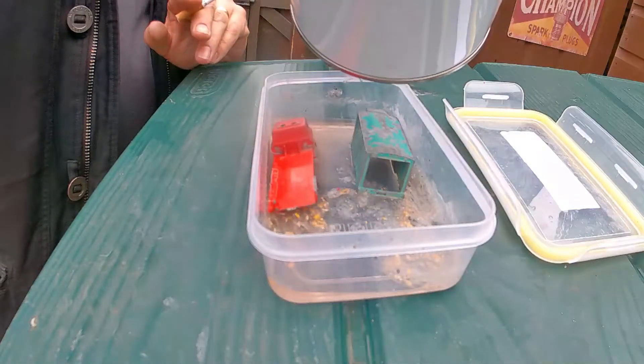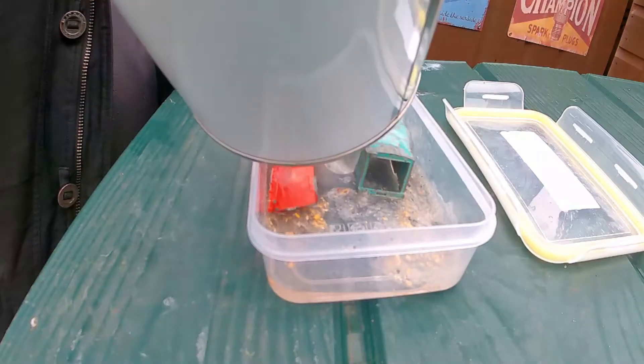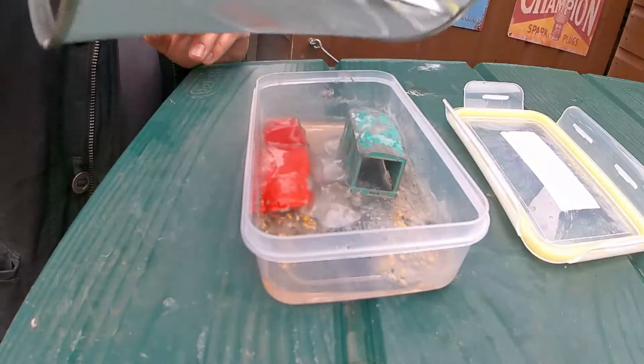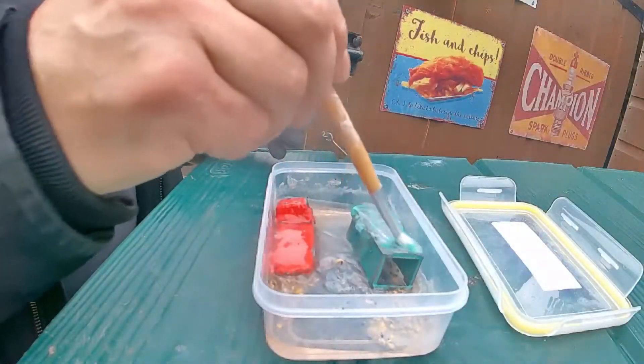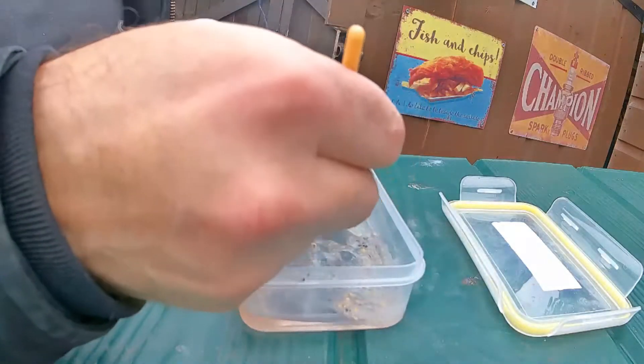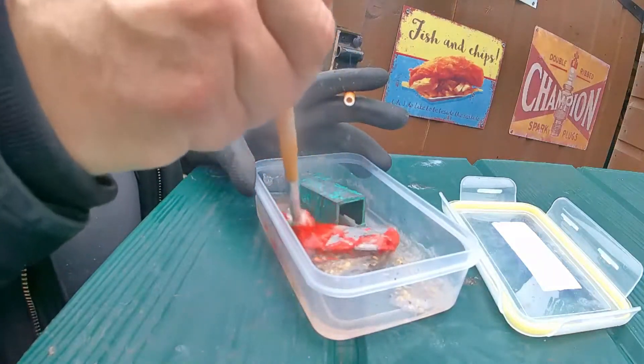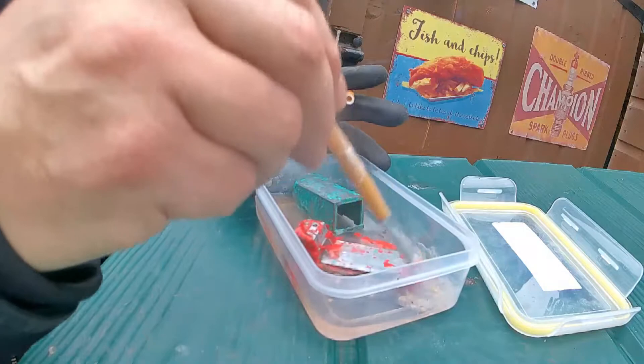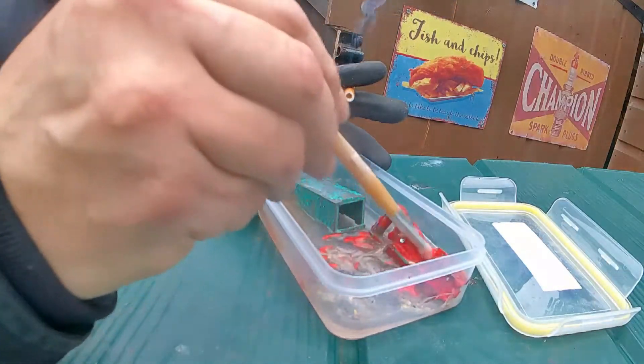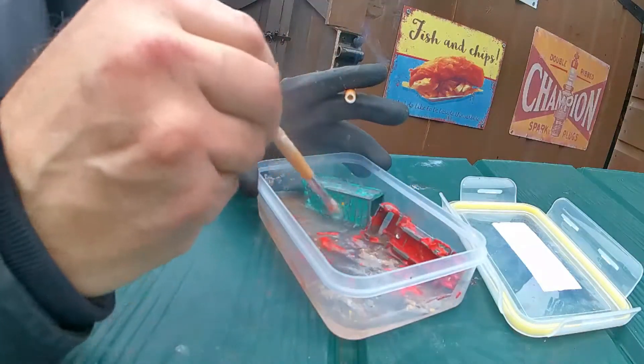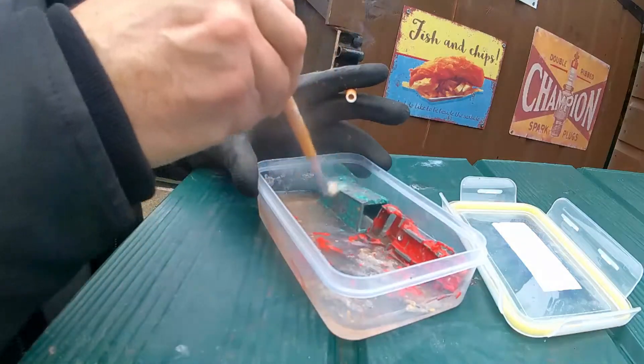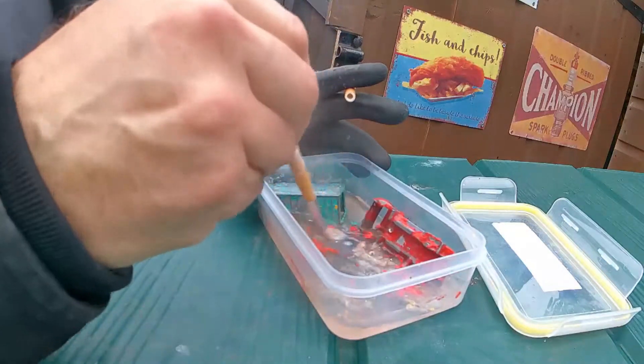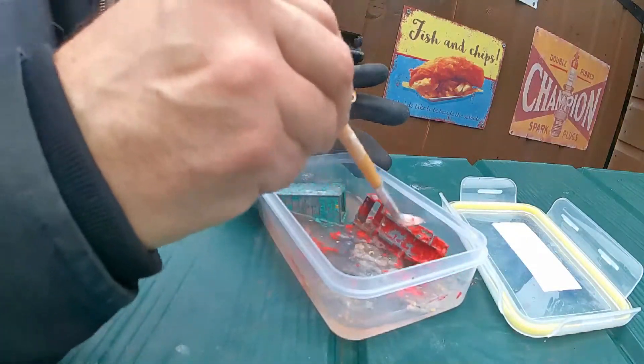So due to the usual time restrictions I'll be using some paint stripper today. It works very well on the Matchbox models and very quickly you can see that the paint starts lifting off. After this is done give it a good wash to get the remaining paint remover off and we'll be ready to give it the usual rub down with the spinning wire brush.